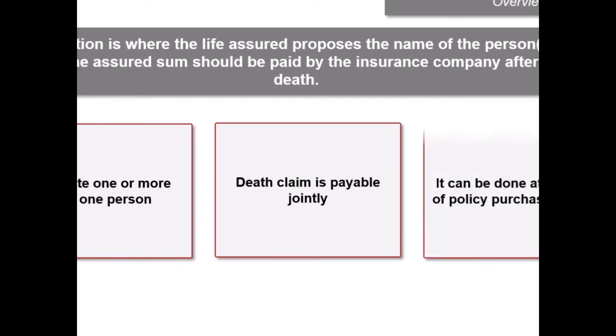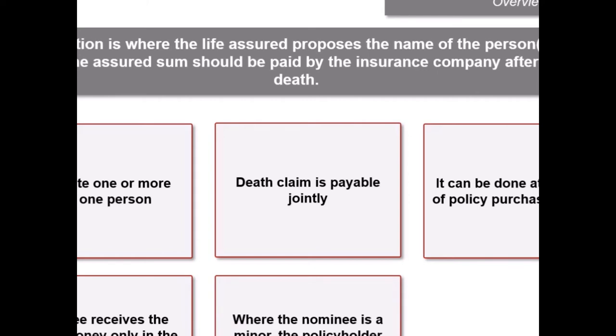Nomination can be done either at the time of policy purchase or later. Nomination gives the nominee a right to receive the policy money only in the event of the death of the life-assured. Where the nominee is a minor, the policyholder needs to appoint an appointee. Nomination can be changed by making another endorsement in the policy.